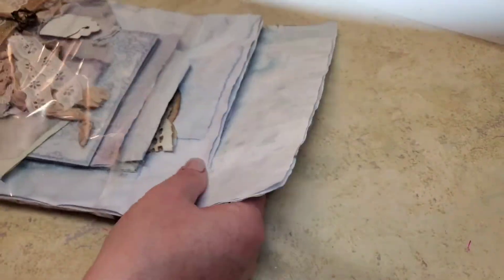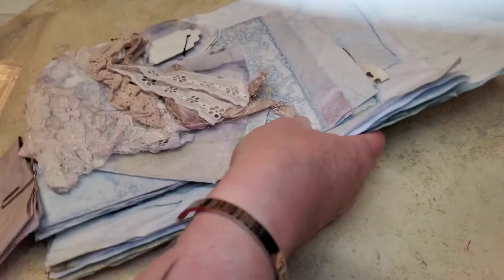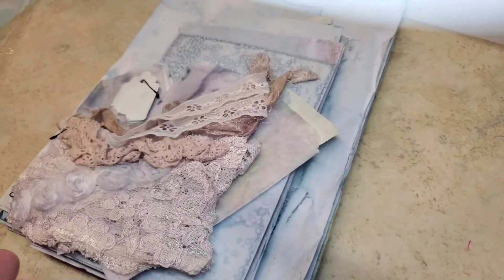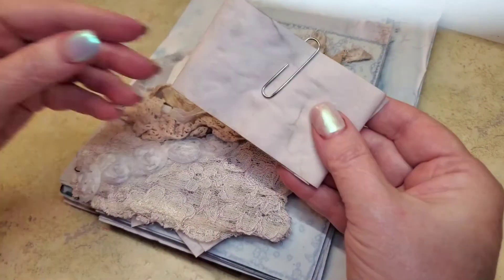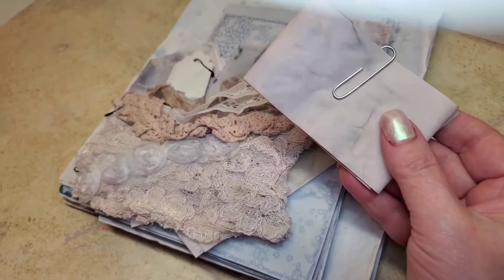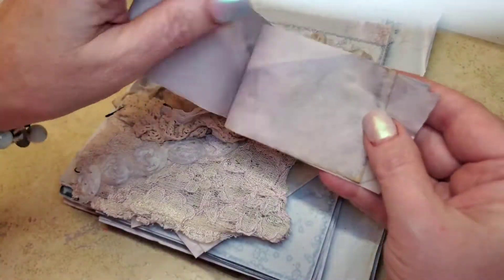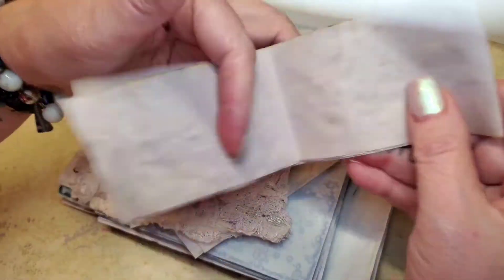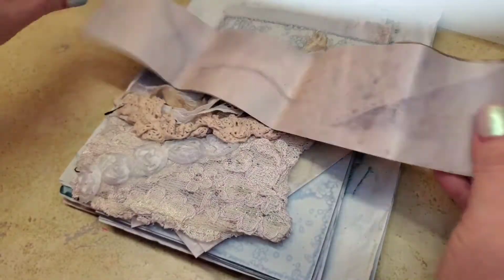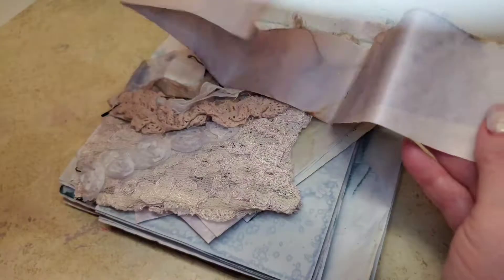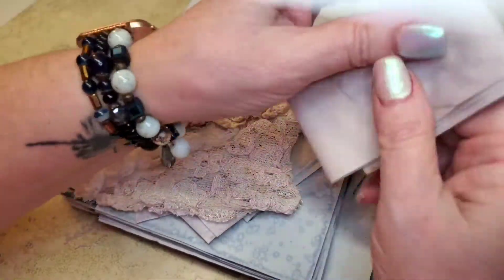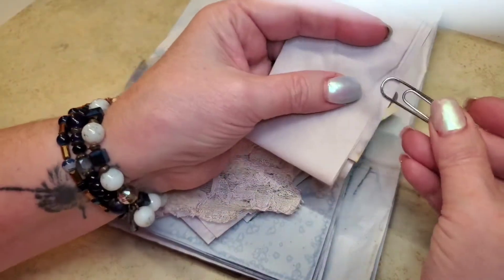So in your package you will get one package of calculator ribbon. You will get one long strip of it, and it just folds out.